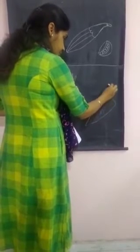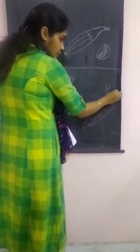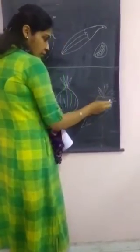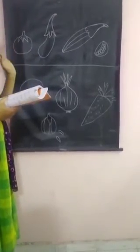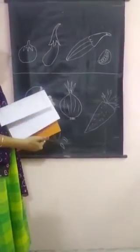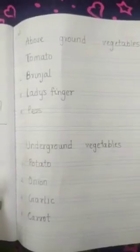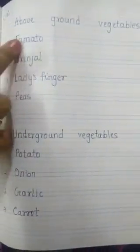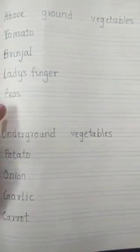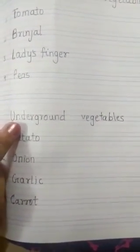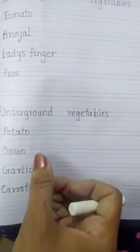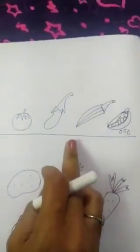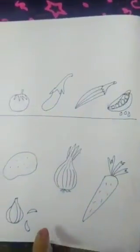Now we will make a leaf for the carrot like this. So this way, simply, I have drawn the pictures of above ground vegetables and underground vegetables. See — CW: above ground vegetables — tomato, brinjal, ladyfinger, and peas. Then leaving one line: underground vegetables — potato, onion, garlic, carrot. This way you have to write and draw, making a line to show the difference.